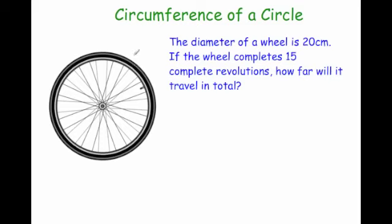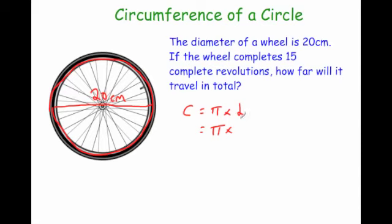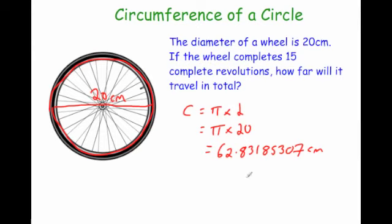Let's look at one last question. The diameter of a wheel is 20 centimetres. If the wheel completes 15 revolutions, how far will it travel in total? First work out the circumference, because that's how far the circle travels in one revolution. Circumference equals pi times diameter, so pi times 20 gives 62.83185307 centimetres. That's the circumference for one revolution, but it does 15 complete revolutions.